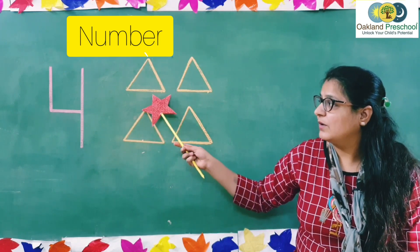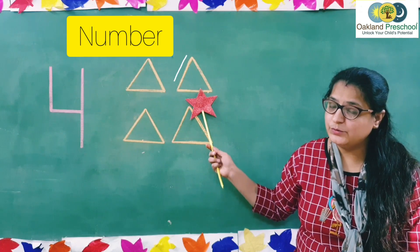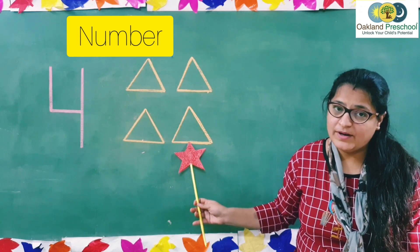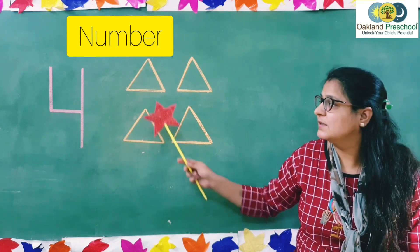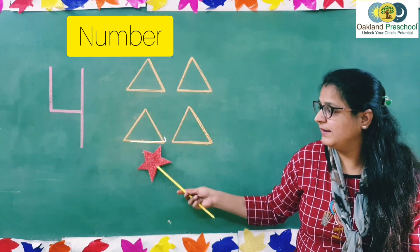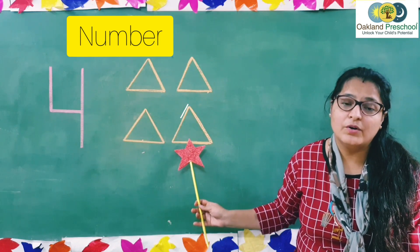Let's count with me. 1, 2, 3, 4. How many triangles are there? 4 triangles. 1, 2, 3, 4. 4 triangles.